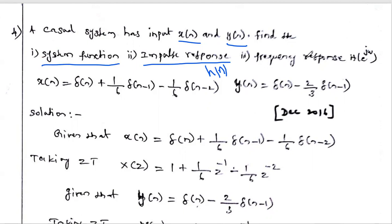The given data is: x(n) = δ(n) + (1/6)δ(n−1) − (1/6)δ(n−2), and output y(n) = δ(n) − (2/3)δ(n−1).